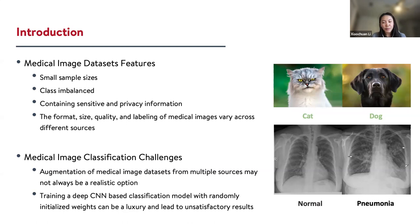Usually due to privacy restrictions and policy concerns, hospitals and medical institutions are not willing to publish or share their medical images. So even though they can share, the format, size, quality, and annotation of the images from different sources may have huge differences. Because of these features, we may face challenges in medical image classification, and augmenting medical images from various sources to have a bigger dataset may not always be realistic.